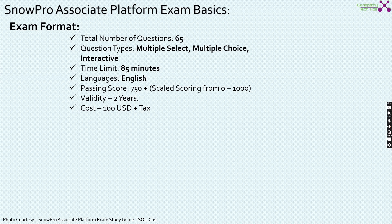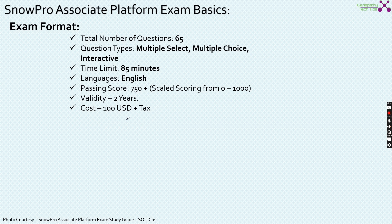Total time is 85 minutes. As of now, only English is supported. Passing score is 750 plus, which uses the scaled scoring method. I strongly recommend you to watch the video on scaled scoring in my YouTube channel. Validity is 2 years. The cost is a minimal 100 USD. Previously for Snowpro Core it was 175 USD. With 100 USD plus tax, coming to close to 118 USD, you can sit for this exam.